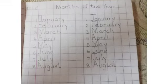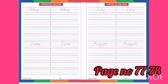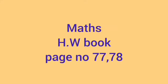So kids, you all have to write in the same format in your notebook. You all have to complete page number 77 and 78 months of the year May, June, July and August given in your maths homework book. I repeat the page numbers 77 and 78.